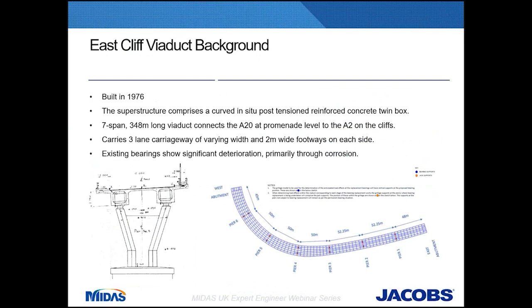Now let's concentrate on the case study itself. The Eastcliff Viaduct was built in 1976. It is a seven-span, 348-metre long viaduct that connects the A20 at the Promenade level to the A2 on the cliffs in Dover, just above the port of Dover. It carries a three-lane carriageway of varying width and a two-metre wide footway on each side.